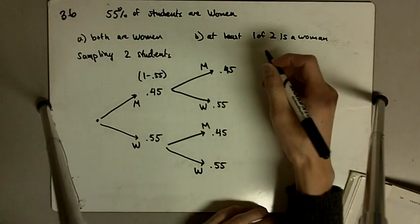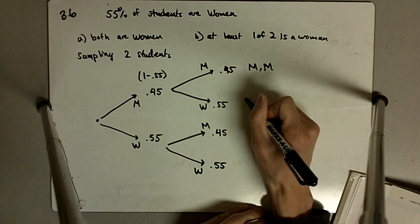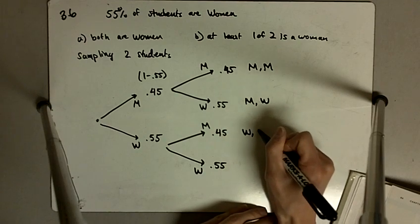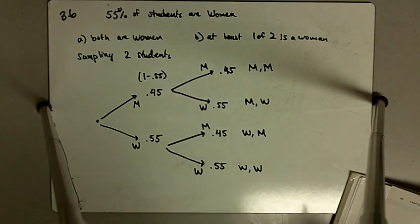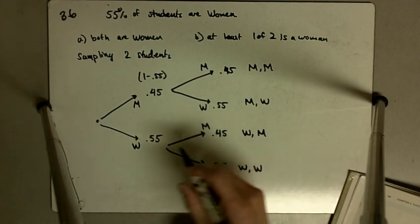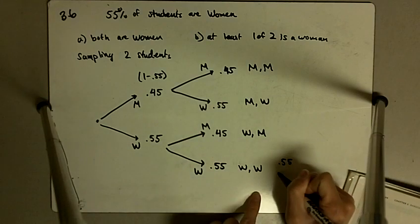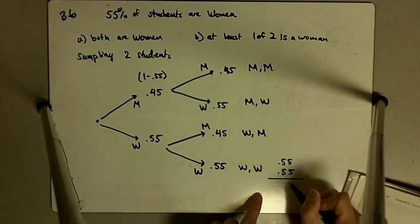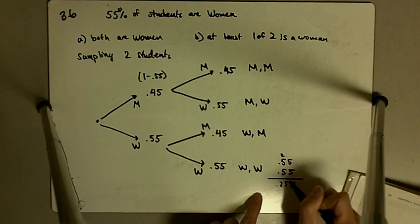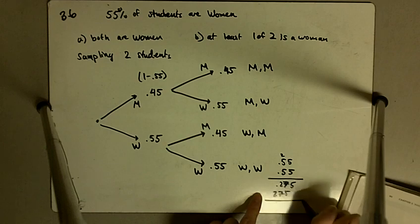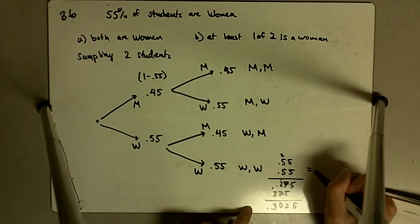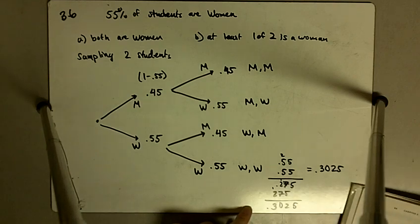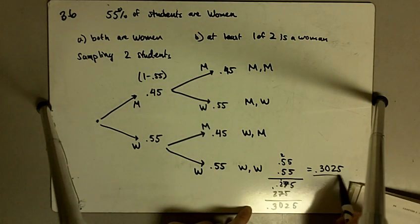The total probabilities then, the end result being man-man, this will be man-woman, this will be woman then a man, and this will be woman then a woman. The probability of selecting both women will be 0.55 times 0.55, and this multiplies out to 0.3025. So that is the answer to part A. Both are women, it will be 0.3025.